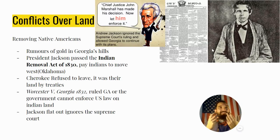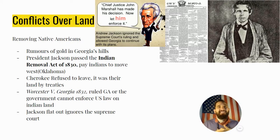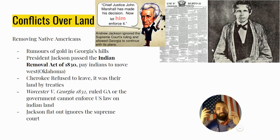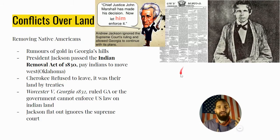Should a president just flat out ignore another branch of the United States government? This is where people started accusing Andrew Jackson of being a king or a tyrant — just about as bad as John Adams' Alien and Sedition Acts, very unconstitutional and unprecedented at the time. Jackson ignored the decision and they started removing the Indians anyway.